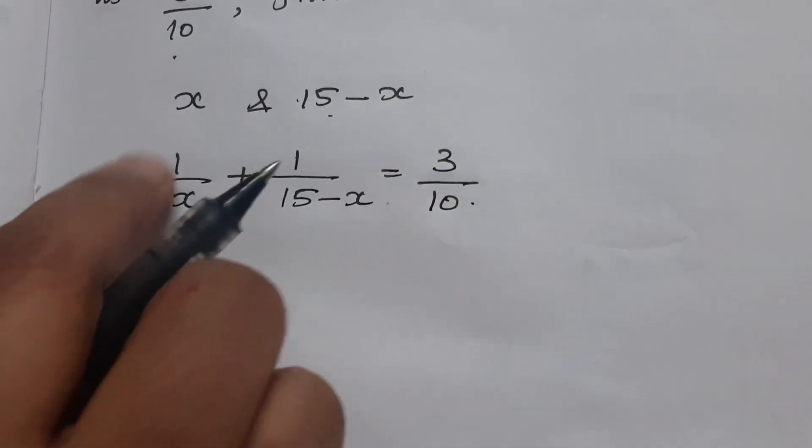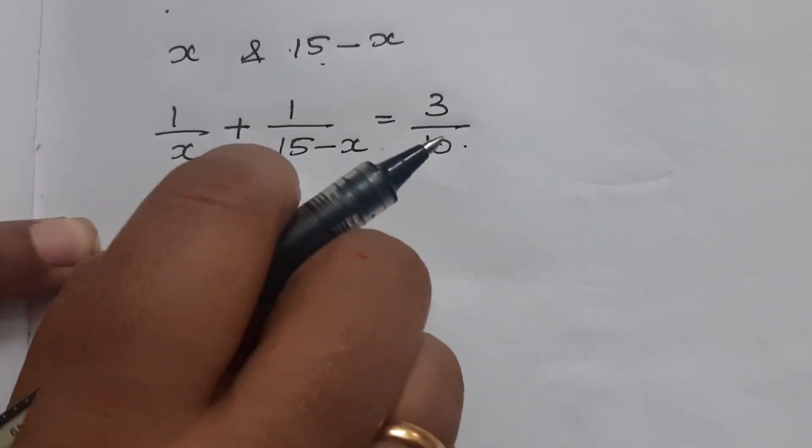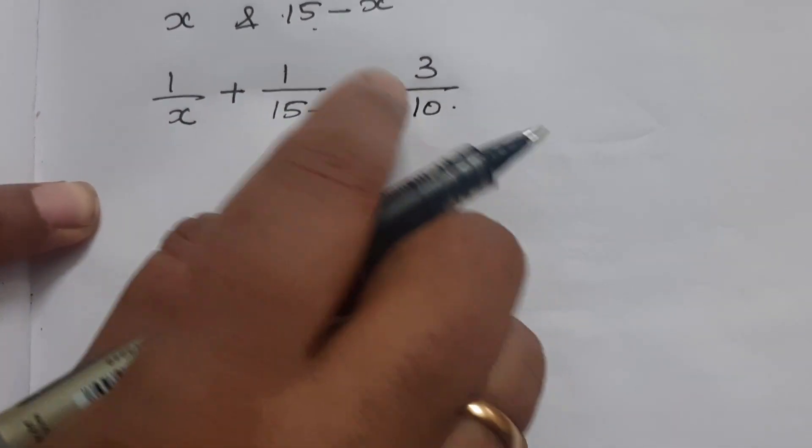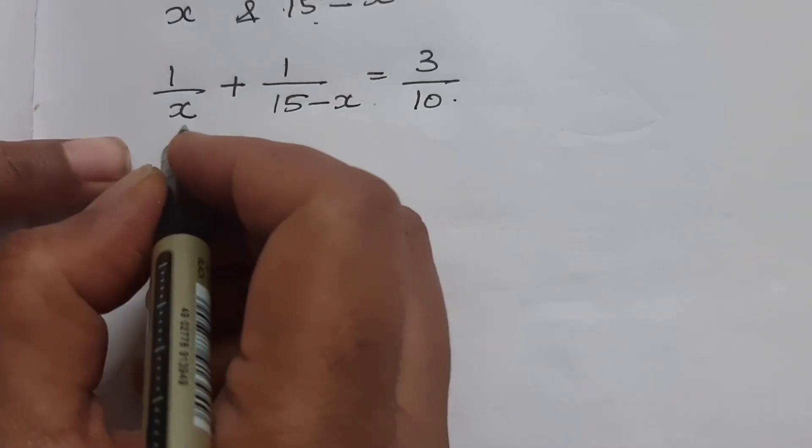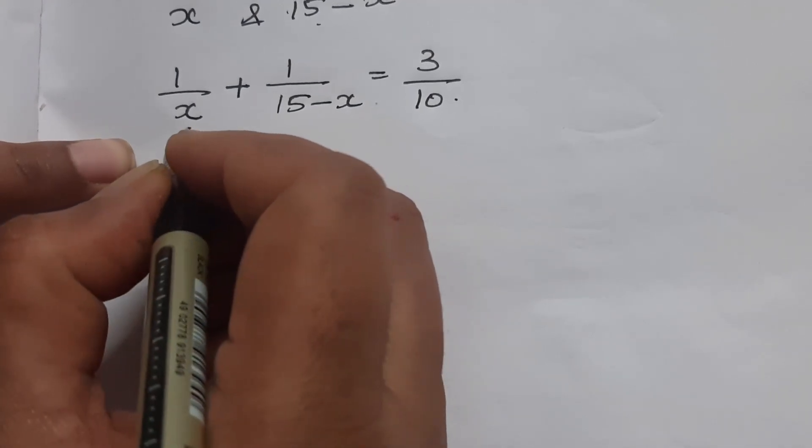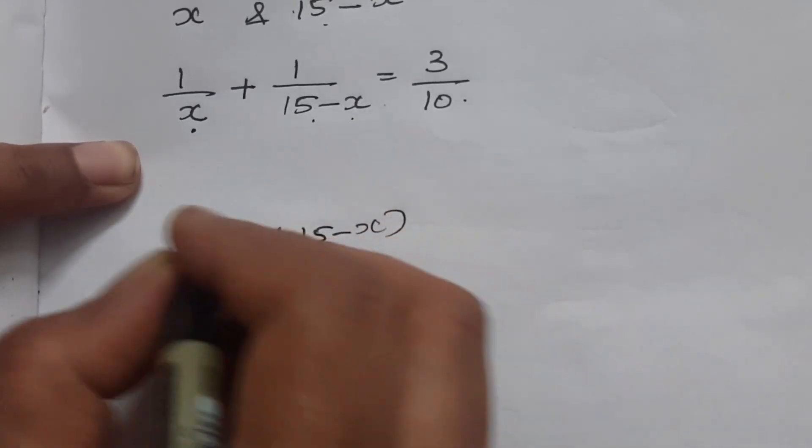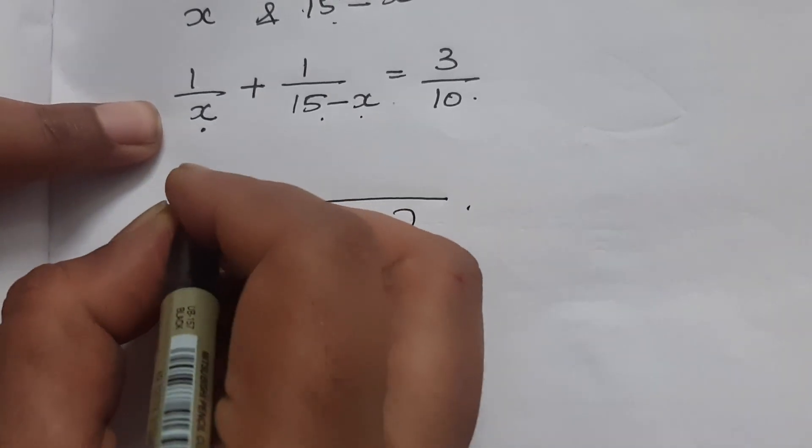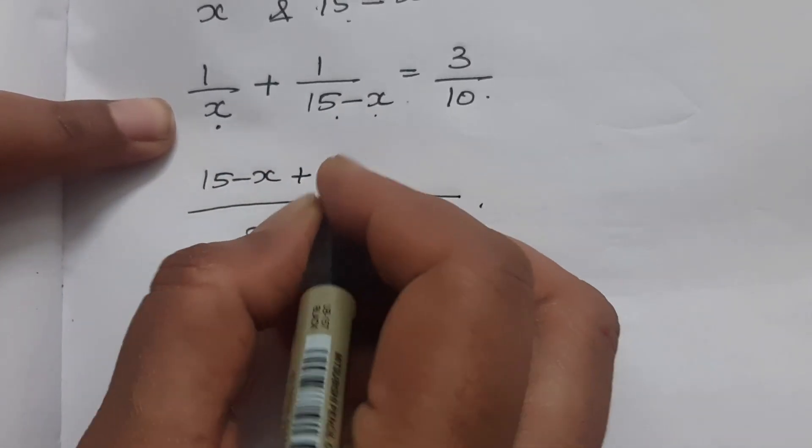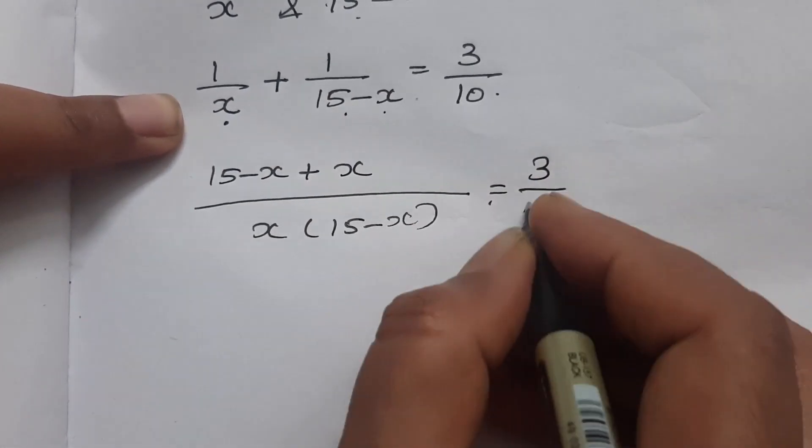This is in the form of quadratic equations. First we have to derive it into the standard form. The common denominator is x times 15 minus x. This gives 15 minus x plus x over x times 15 minus x equals 3 by 10.